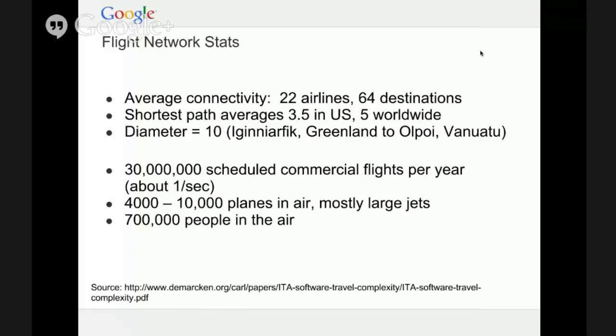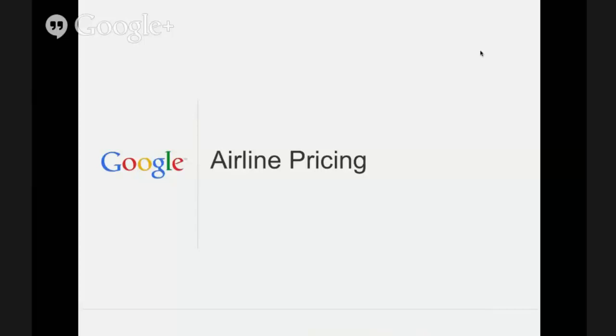This should convince you that the problem space is huge — there is no simple way to just run a simple algorithm and come up with answers quickly. The data set is simply too large. You might say we have huge data centers — Google has them, Amazon has made them available to anyone — so why not just use all that computing to parallelize it and get good results? It turns out the next piece of the puzzle that makes it very, very difficult is airline pricing.